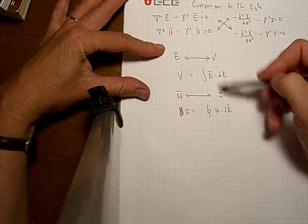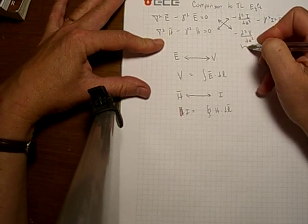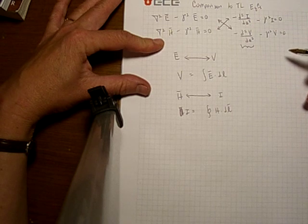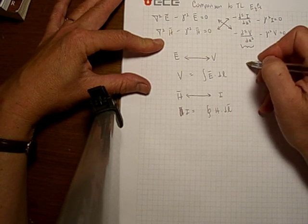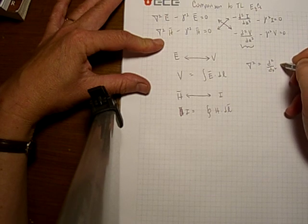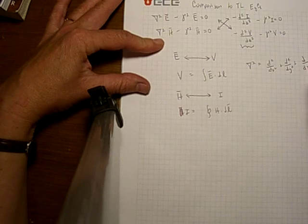So here we have two equations that represent very similar things. Let's take a look at this term right here. This term is the second derivative of either the current or voltage in the z direction. The Laplacian operator is d by dx squared plus d by dy squared plus d by dz squared.